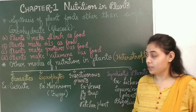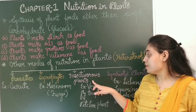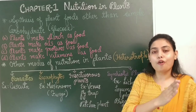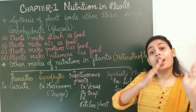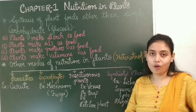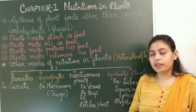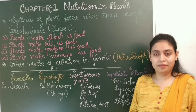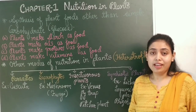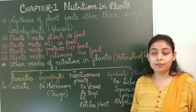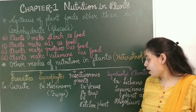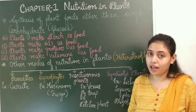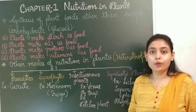Third mode of nutrition: insectivorous plants. The plants which obtain their energy partially from photosynthesis and partially from insects are called insectivorous plants. Even plants are carnivores. Let us see few examples: Venus flytrap and pitcher plant. I am sharing a video of Venus flytrap plant and pitcher plant. Go through the video.